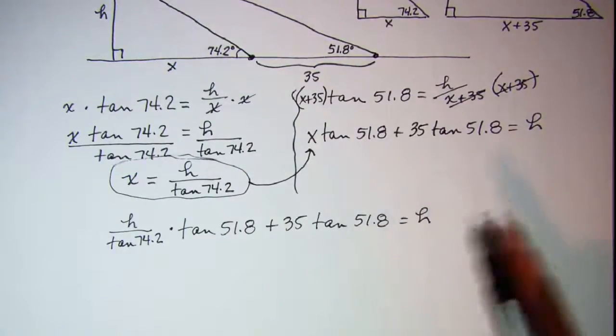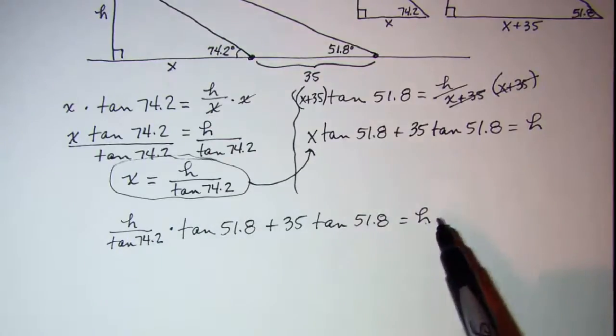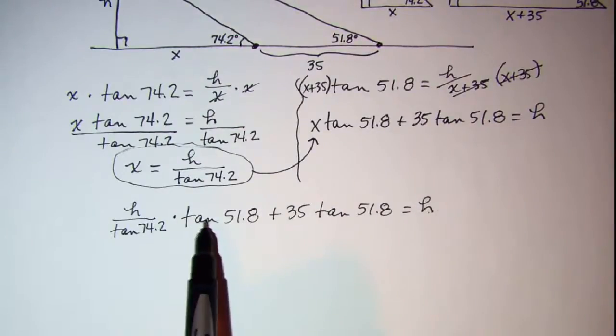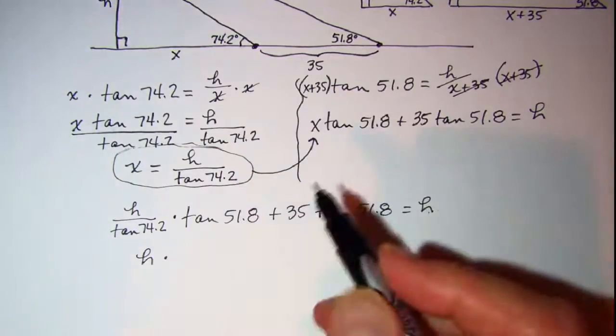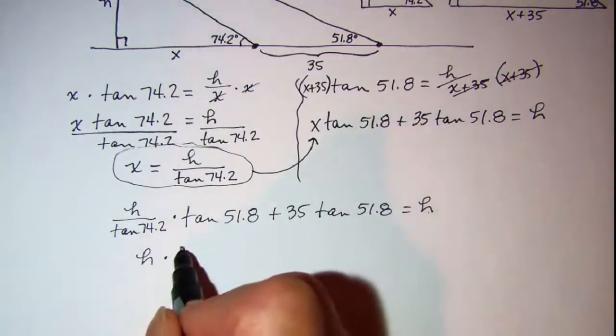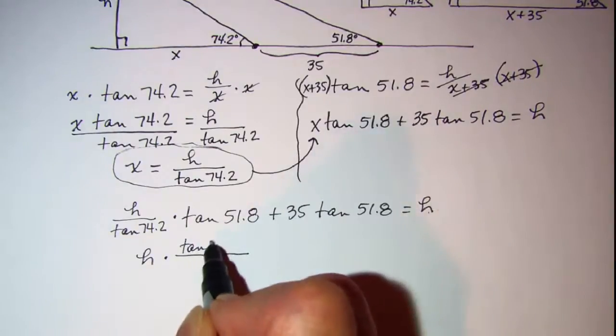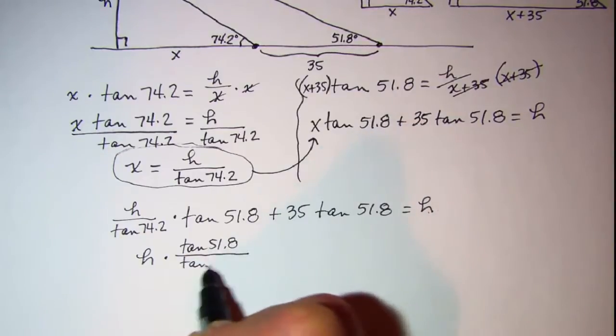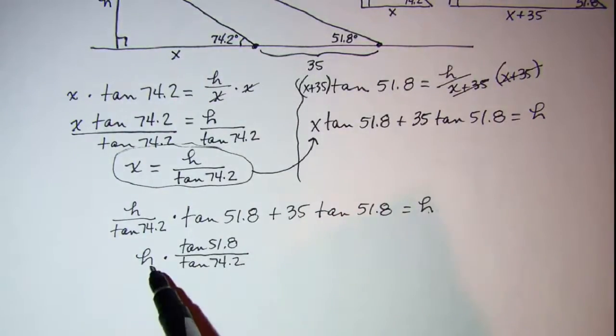Now I just need to solve for H. Looks like I have an H in two places here, so I need to get them all on one side. When I multiply these two factors together, I can separate my H away from the rest of the product.